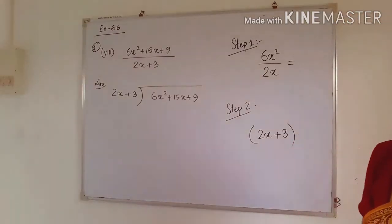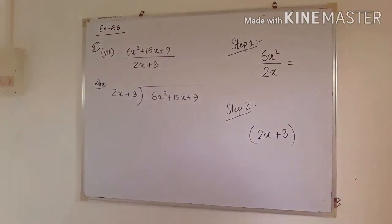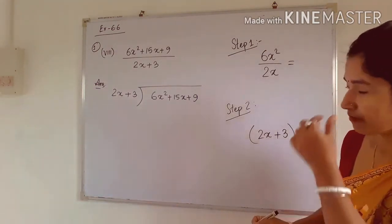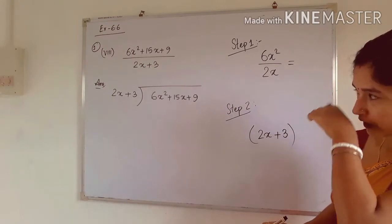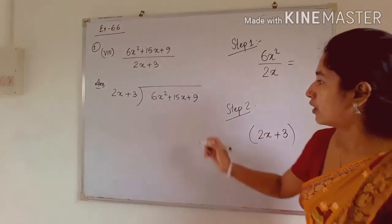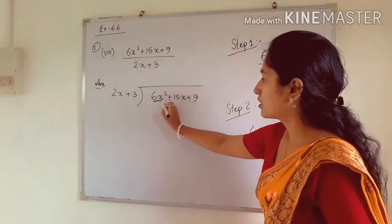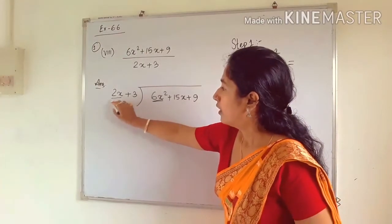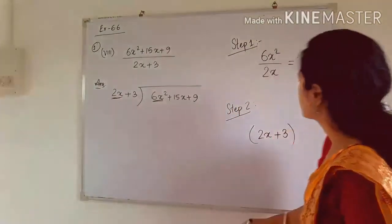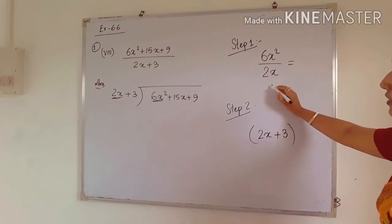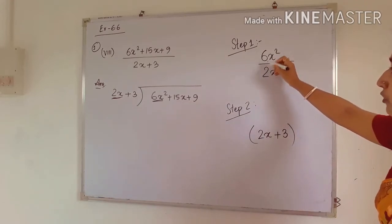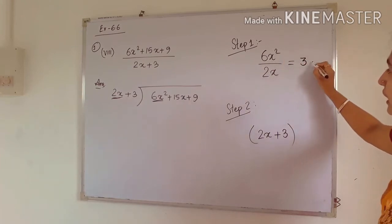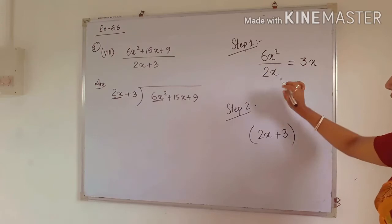Now I am doing one more question; the remaining questions you have to do by yourself. In step 1, in the dividend the first term is 6x², and we divide it by the first term of the divisor, which is 2x. So 6x² ÷ 2x: cancel the numerical coefficients to get 3, and x² ÷ x = x, giving 3x.